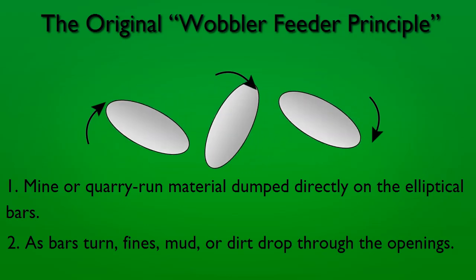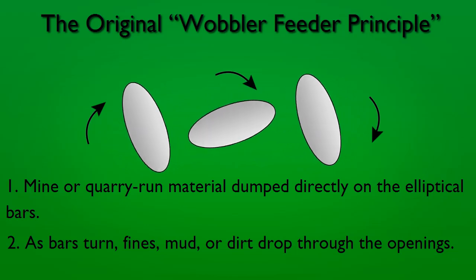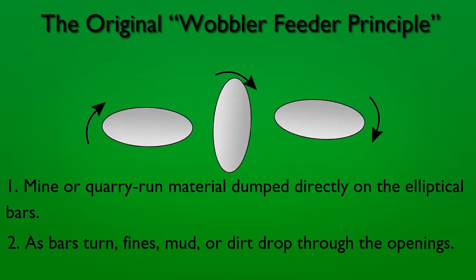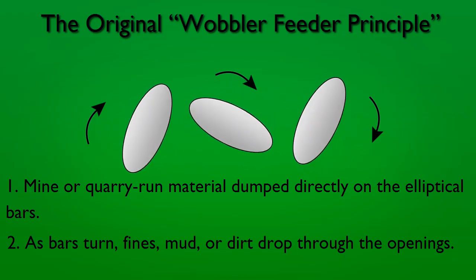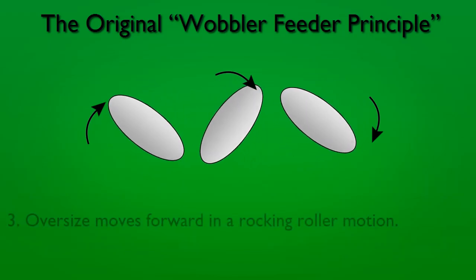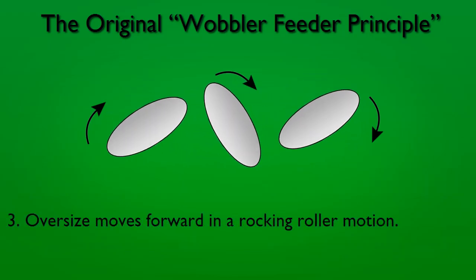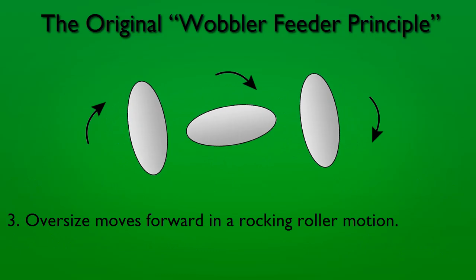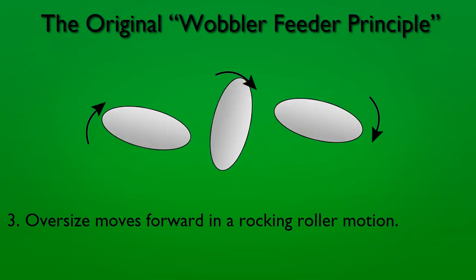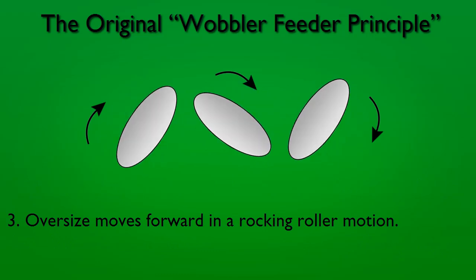Wobbler bars rotate in the same direction, all at the same speed. Spacing remains constant throughout the rotation. Oversize material moves forward in a rocking roller motion.